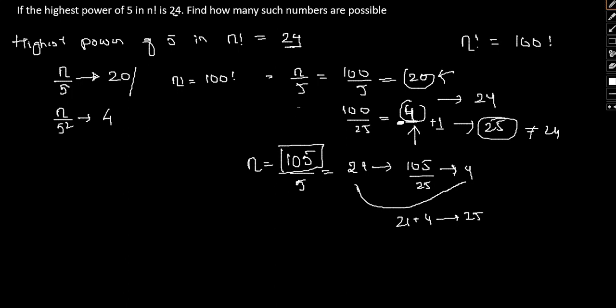So, that is any number which is less than 105 and more than 100 that is from 100 to 104 factorials will have the highest power of 5 as 24. So, therefore,